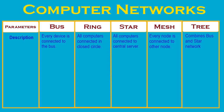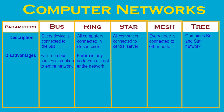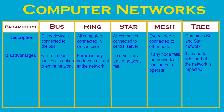In bus topology, failure in the backbone causes disruption of the entire network. Similarly, in ring topology, failure in any node can disrupt the entire network. In star topology, if the server fails, the entire network fails. In mesh topology, if any node fails, the network still continues to operate. In tree topology, if any node fails, part of the network is impacted while others continue to operate.